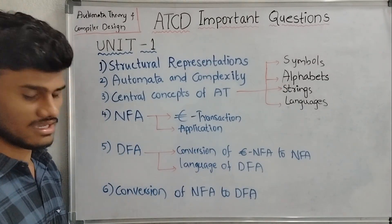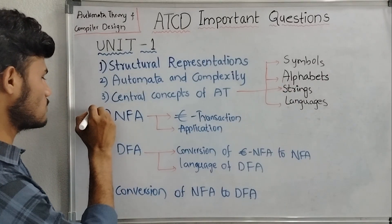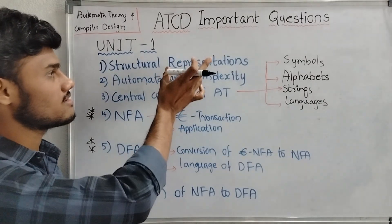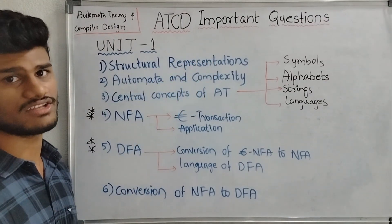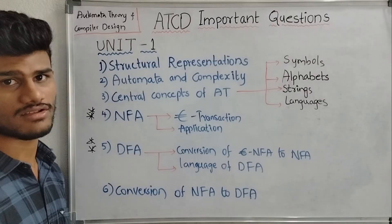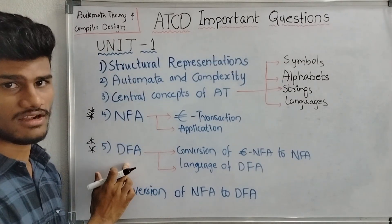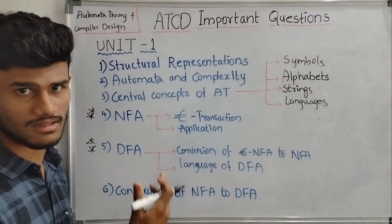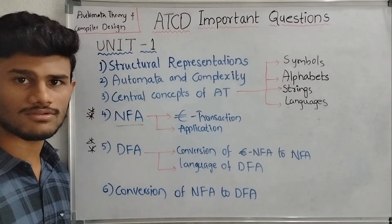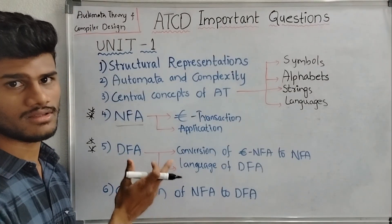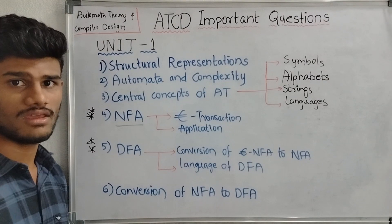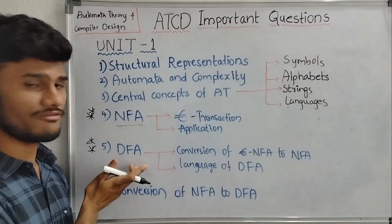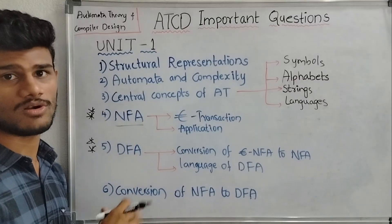Next we have NFA. This unit covers the first chapter, and NFA and DFA are the most important questions. This is the structural representation of Finite Automata — an easy topic to explain. NFA stands for Non-Deterministic Finite Automata, and DFA stands for Deterministic Finite Automata.